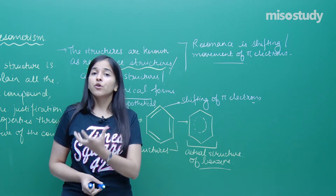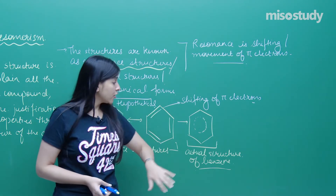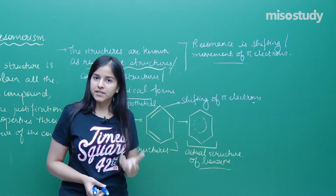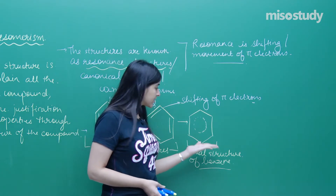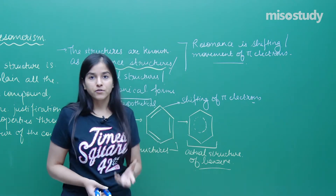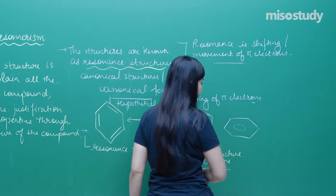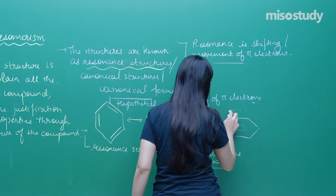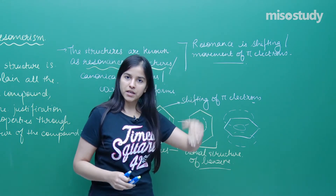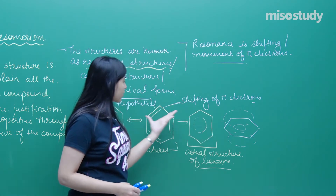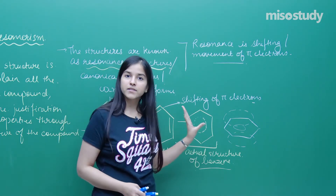Electrons keep on moving continuously; they are not stagnant. Due to this non-stagnant nature, there is continuous movement of electrons. In benzene, the pi electrons keep on moving this way. The pi electron cloud is above and below the ring — it is a cloud continuously moving, not stagnant at fixed positions. In the real world, benzene looks like the circle representation.